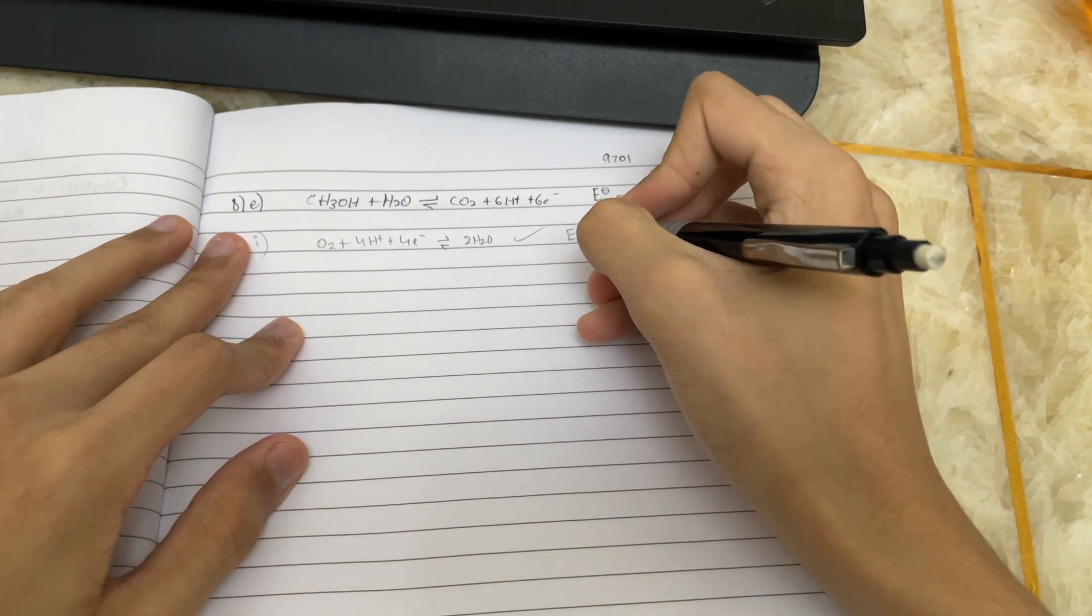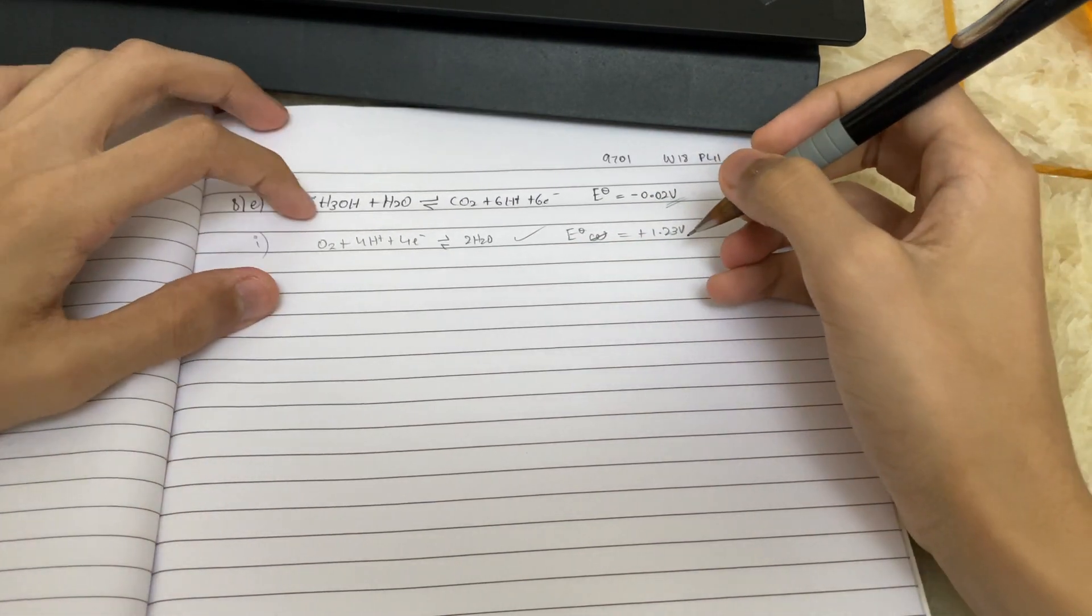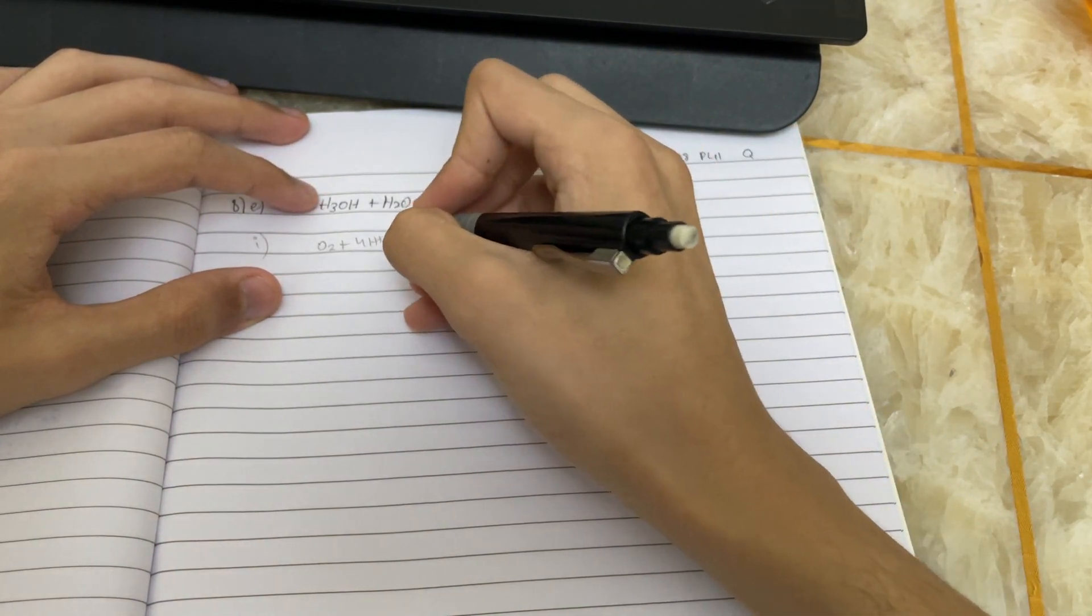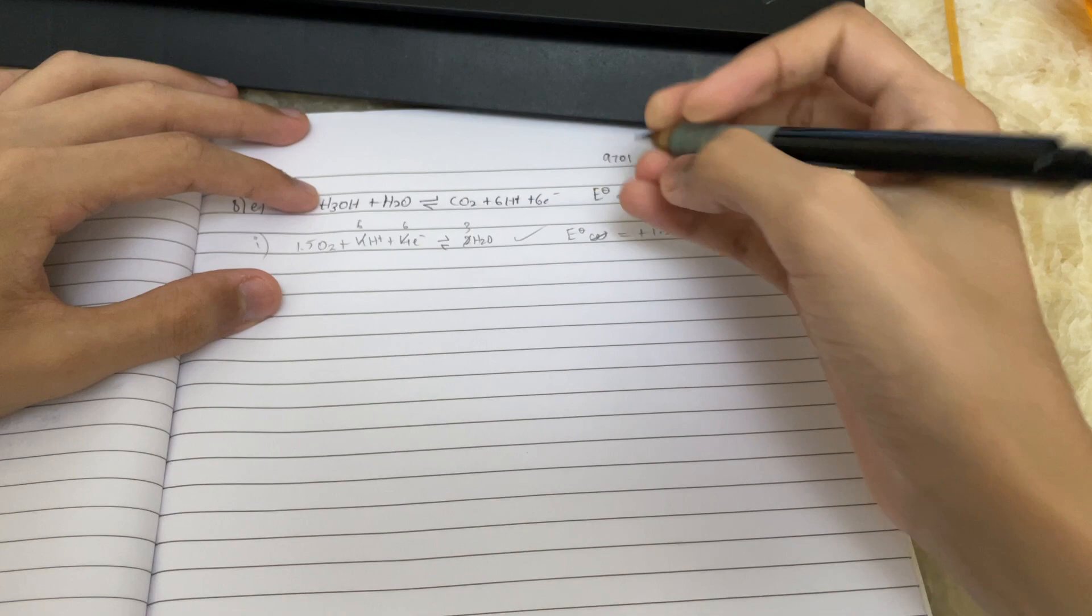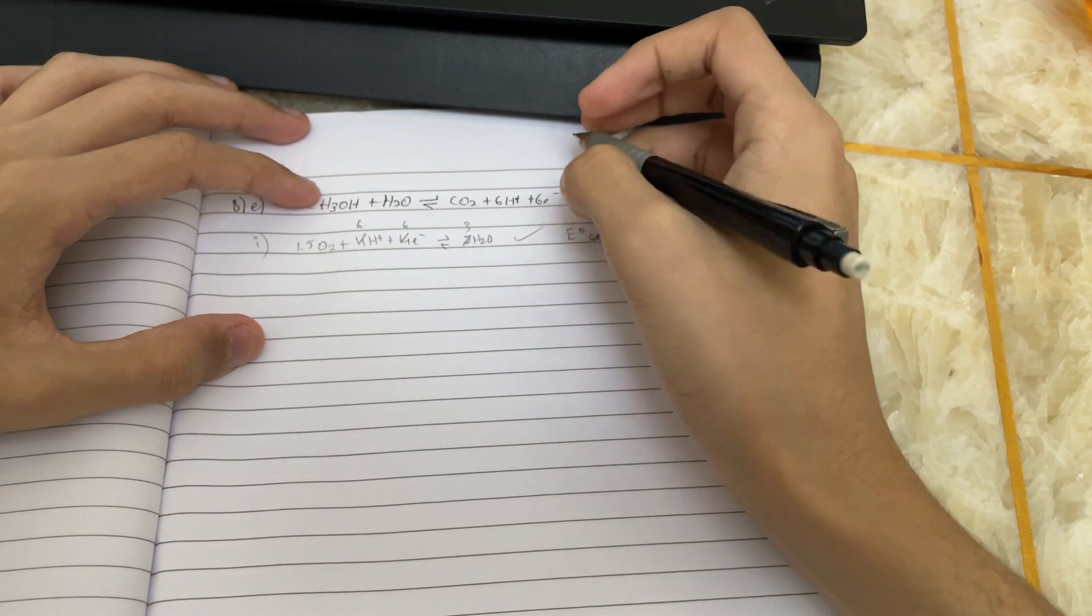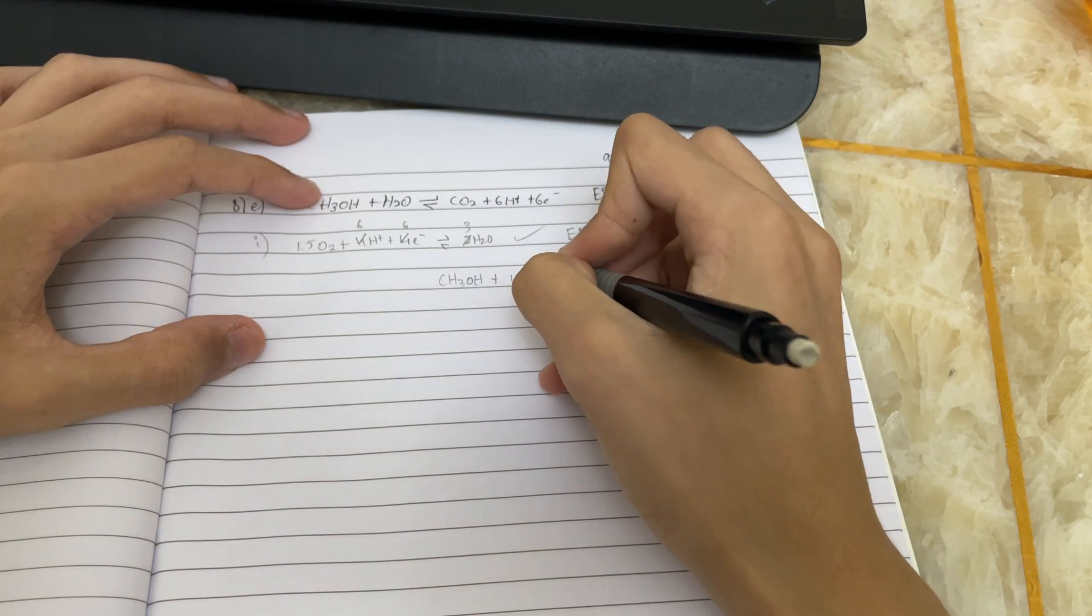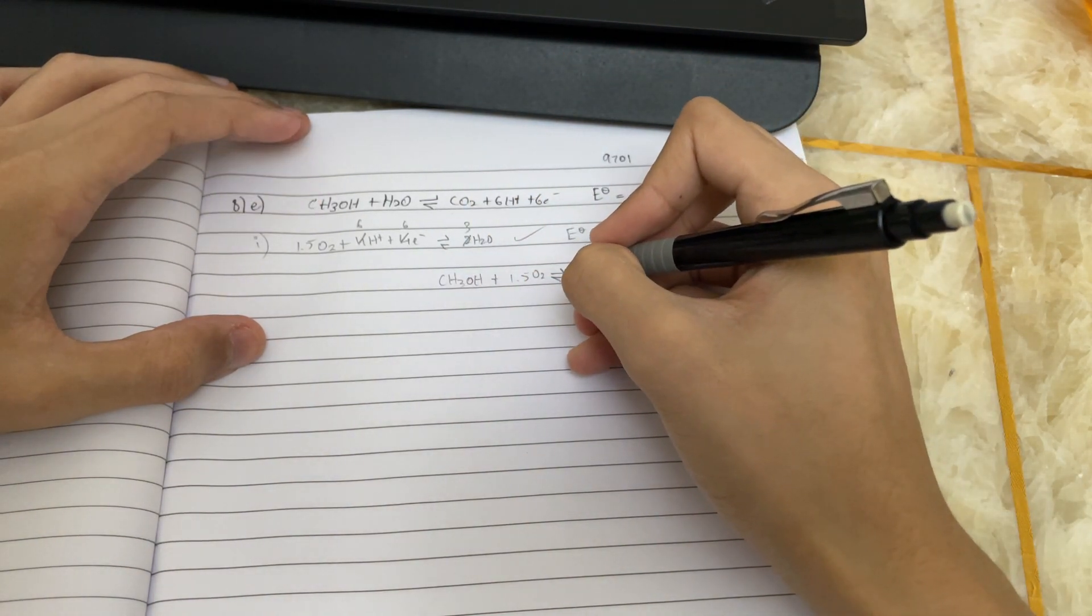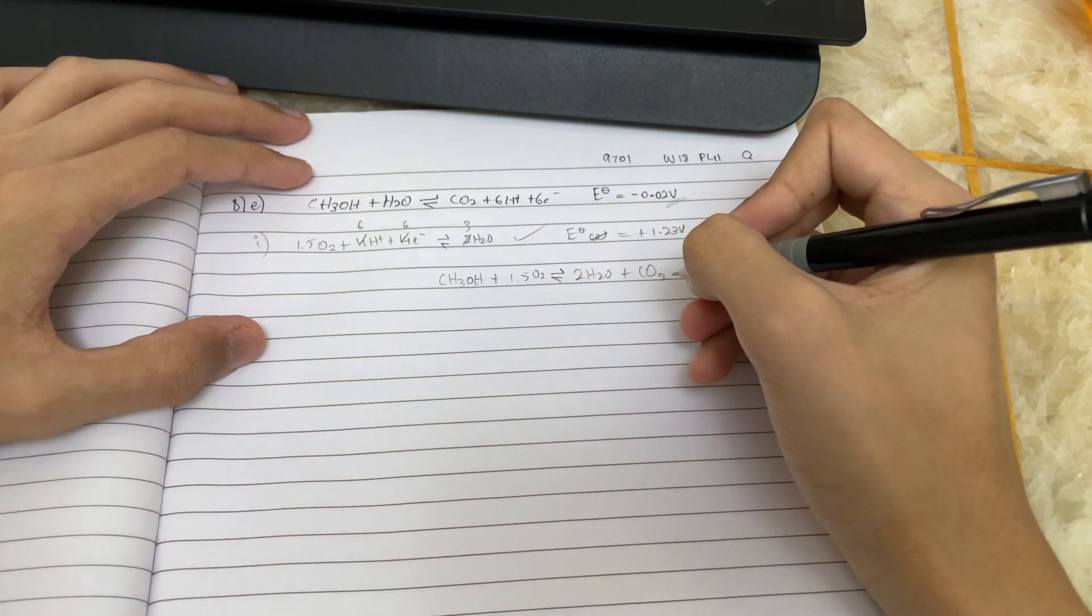And now you've just got to balance the equation or balance the number of electrons at least. So there's 6 here, you have to make it 6 here. So multiply this entire thing by 1.5. It gives you 6, 1.5, and this becomes 3, right? And then you just substitute this into the equation. And the final equation you should get would be CH3OH plus 1.5O2 which would give me, I suppose, 2H2O plus CO2. If I'm not mistaken.